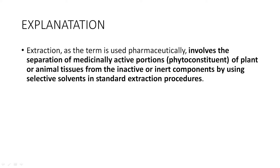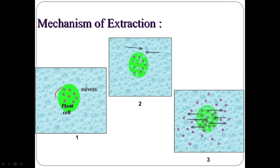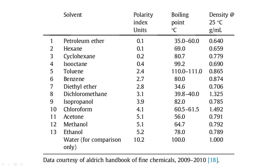Extraction refers to obtaining medicinally active constituents from plant material — this is called phytoconstituents. The phytoconstituents are extracted using a selected solvent through a standard extraction procedure. We choose the solvent based on polarity — water, petroleum ether — to extract water-soluble or lipid-soluble compounds.